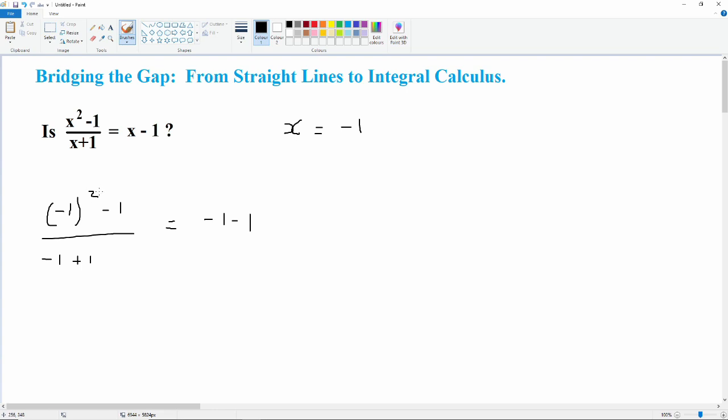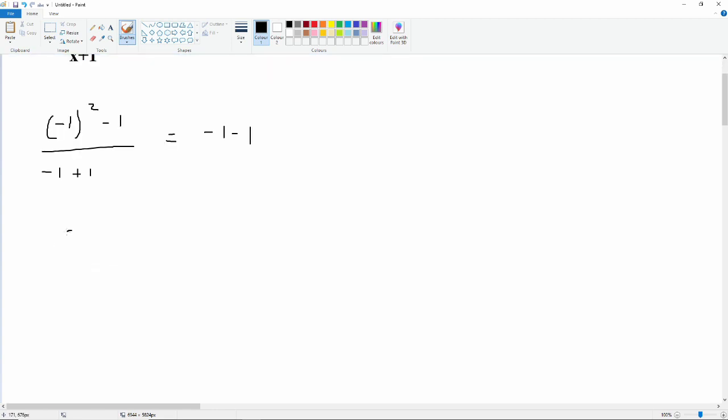Negative 1 squared is 1 and 1 minus 1 is 0. So we have 0 on the top and we're dividing by negative 1 plus 1 which is just 0 on the bottom. And that's equal to negative 1 minus 1 is negative 2. So 0 divided by 0 is equal to negative 2.